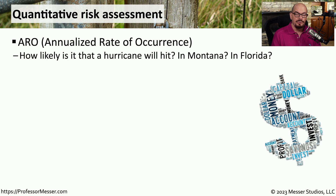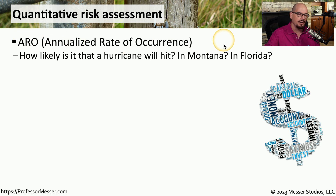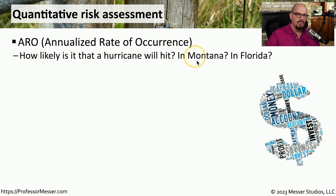There may be certain risks where we can calculate a specific value. We refer to these as a quantitative risk assessment. This might start with an ARO, which stands for annualized rate of occurrence. This allows us to determine how often this risk will occur in a single year. For example, the annualized rate of occurrence that a hurricane will hit will probably be lower in Montana than it is in Florida.